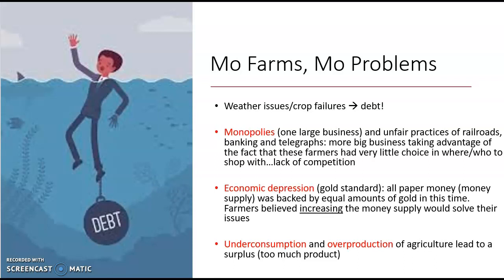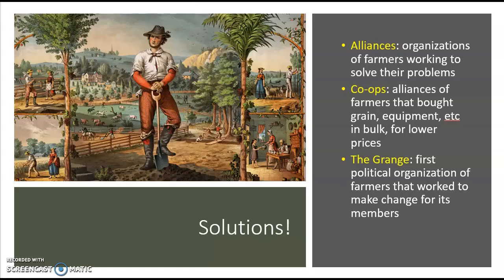We know there are problems — all roads lead to debt. Now we've got to have solutions. Let's take note of some things these farmers are doing, all happening in the last 50 years of the 1800s. Alliances: organizations of farmers start to work together to solve their problems. There are going to be all sorts of farmers alliances — the Southern Farmers Alliance, the Western Alliance, and others. They basically get together and ask, 'What can we do about some of this stuff?'